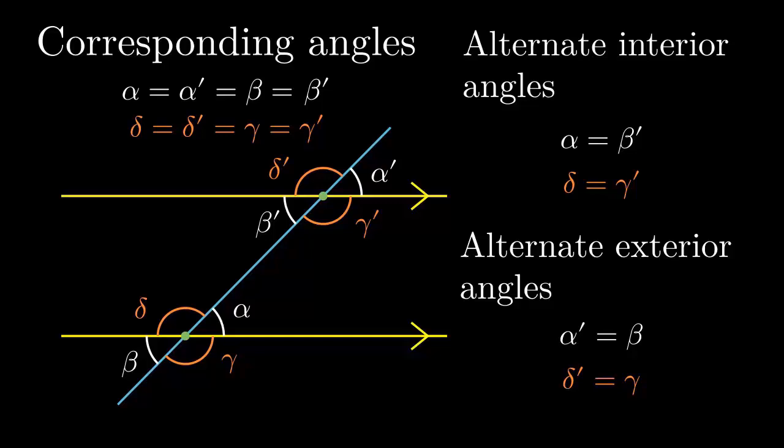So far, you might think how those corresponding angles and vertical angles are connected to the corner cube reflection. But we are close to seeing it. Next time, we connect these and mirror reflection and see how a corner cube reflector works.